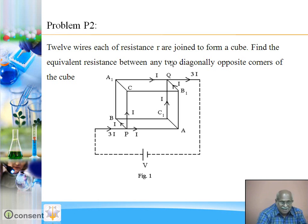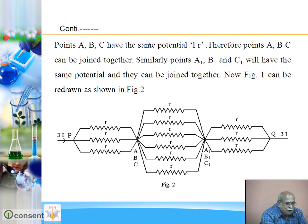So the situation is, resistance of each edge is R. Points A, B, C can be joined together. Points A1, B1, C1 can be joined together. After we do this, figure 1 will reduce to figure 2. From P to A, B, C: PA resistance R, PB resistance R, PC resistance R. At once, you find that these 3 resistances are in parallel.